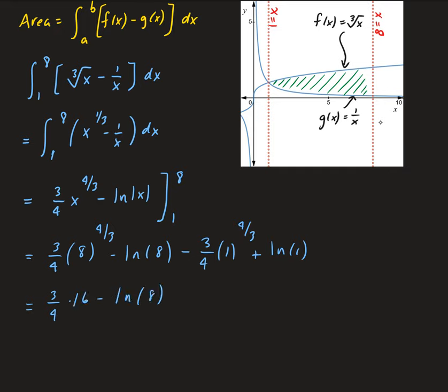So we have minus natural log of 8. Then 1 to the 4/3 is just 1, so we have minus 3/4. And natural log of 1 gives us 0. Simplifying: 3/4 times 16 minus 3/4, which gives us 12 minus natural log of 8 minus 3/4. That simplifies to 45/4 minus natural log of 8. This is the area of our shaded region.